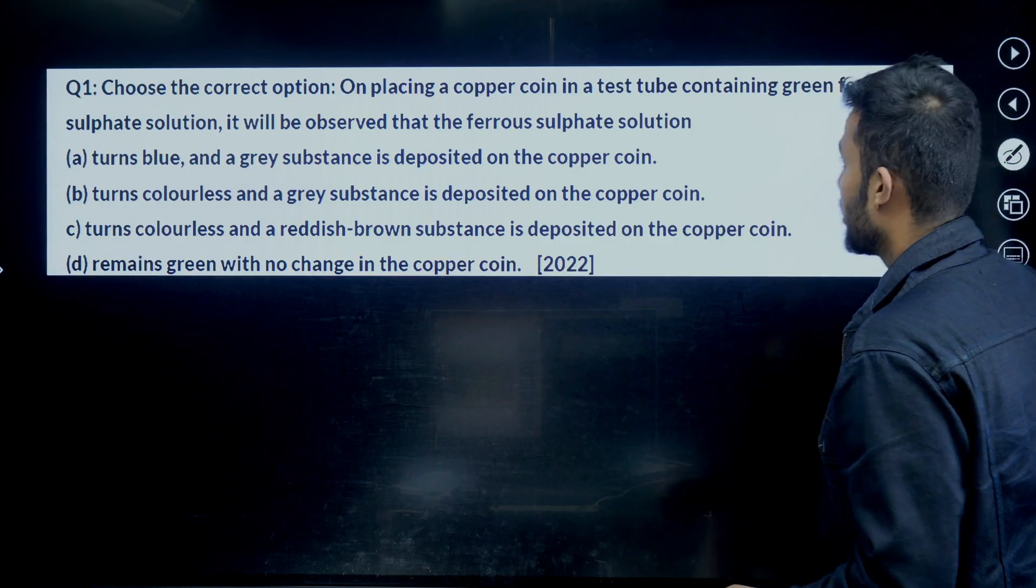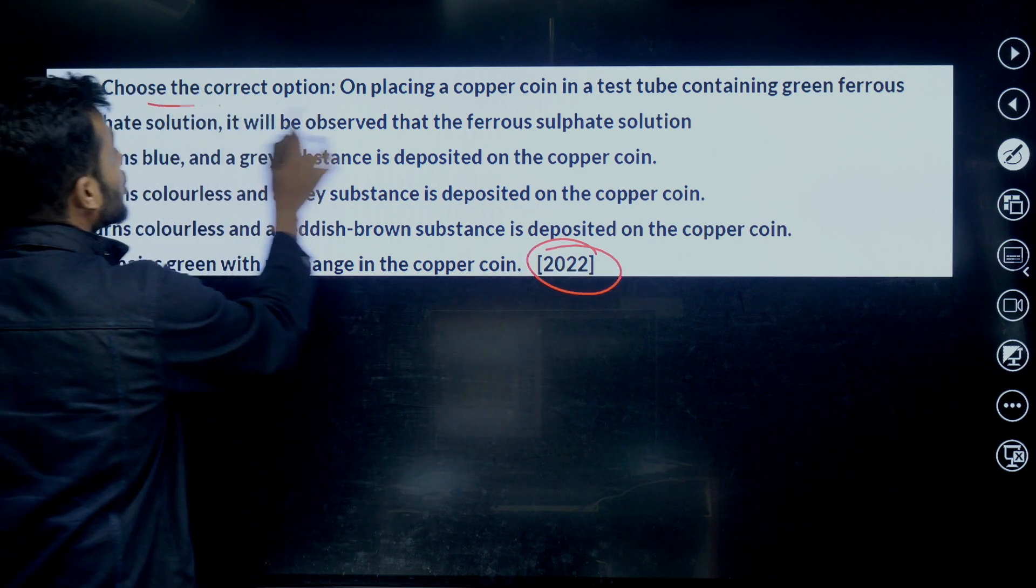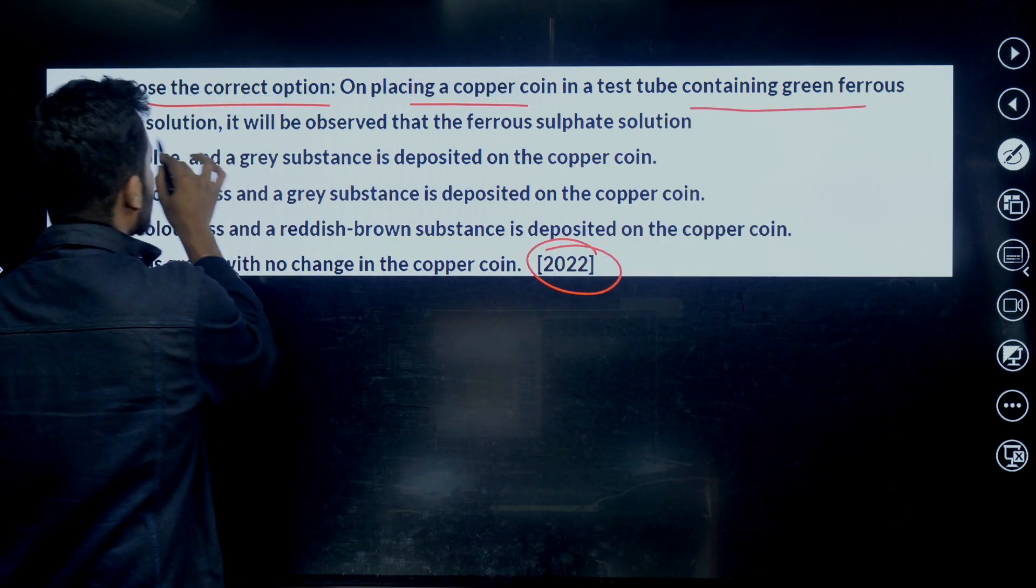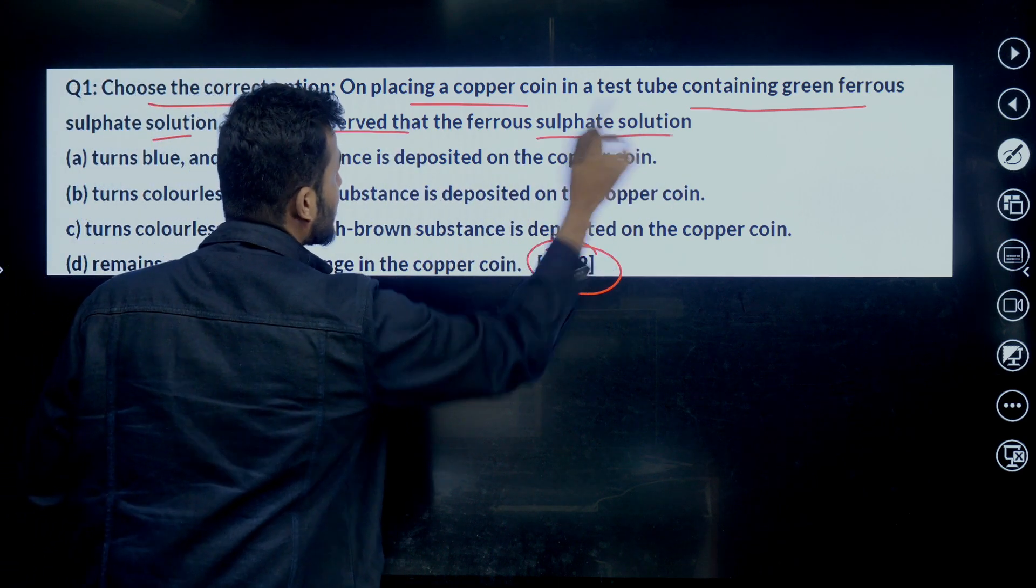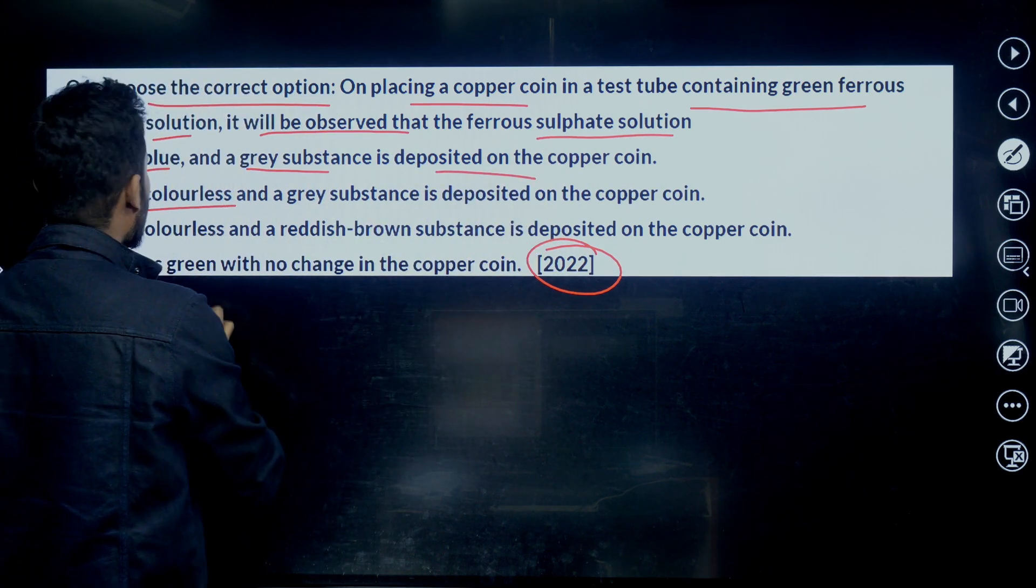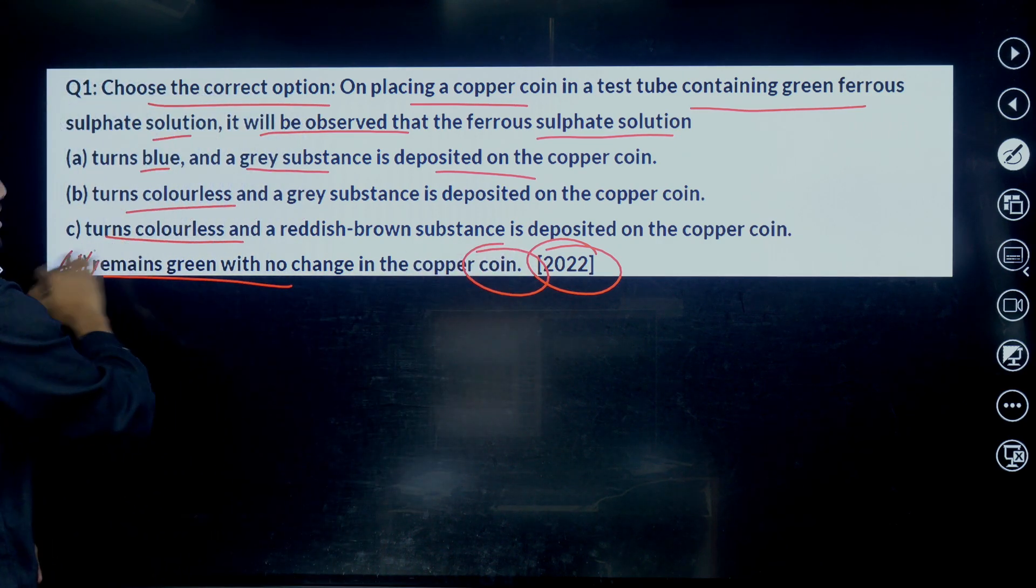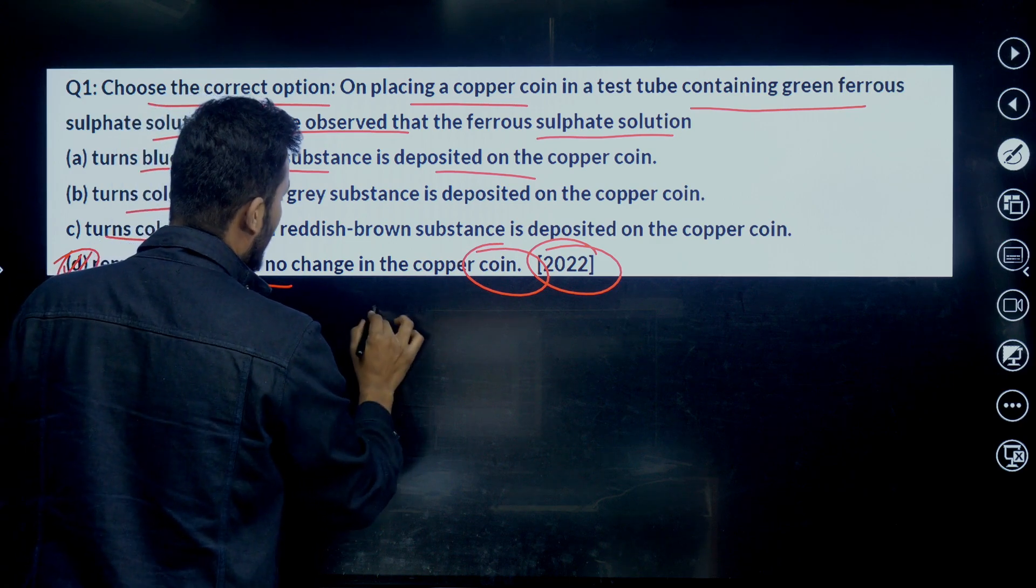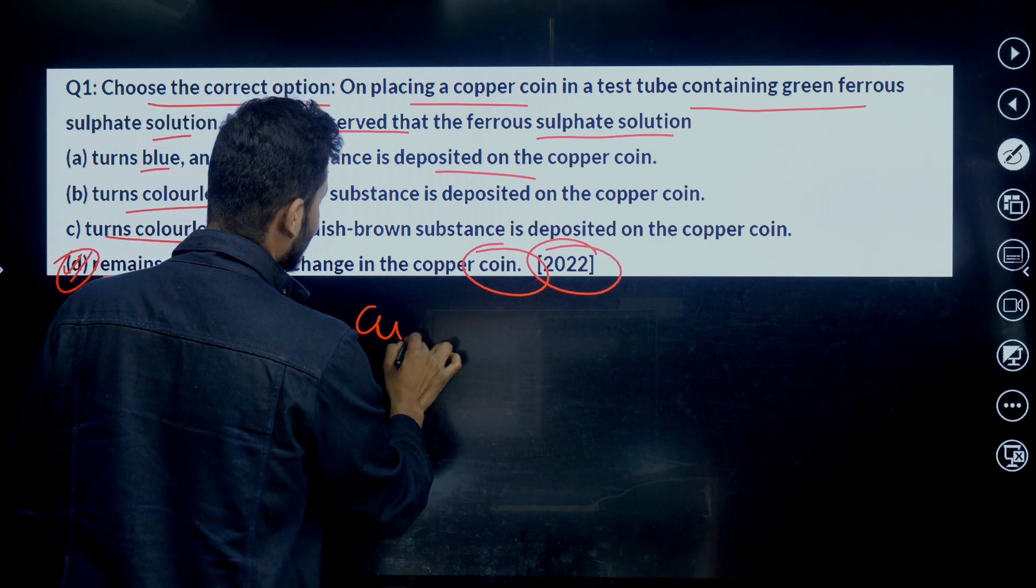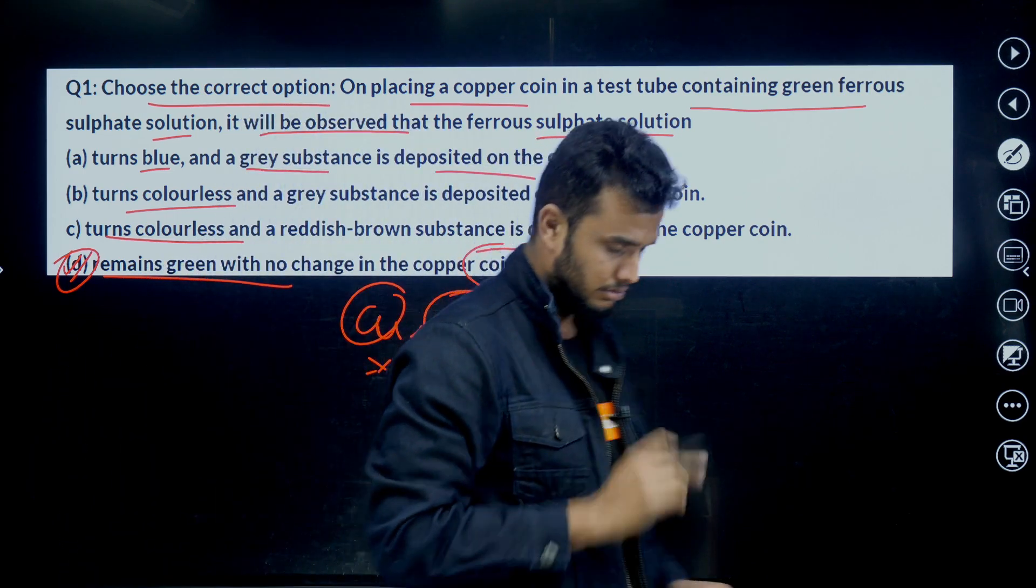Let's discuss. Okay, let's move for the first question. The first question is a 2022 question, students. Choose the correct option: On placing a copper coin in a test tube containing green ferrous sulfate solution, it will be observed that the ferrous sulfate solution turns blue and a gray substance is deposited, turns colorless, or remains green with no change in the copper coin. The answer is option D, right. Why? Because what happens, students, compared to here, copper is placed in the green ferrous sulfate. Compared to iron, copper is less reactive.